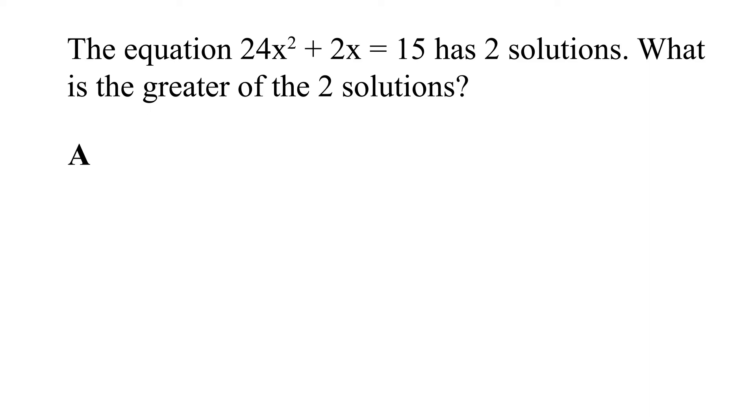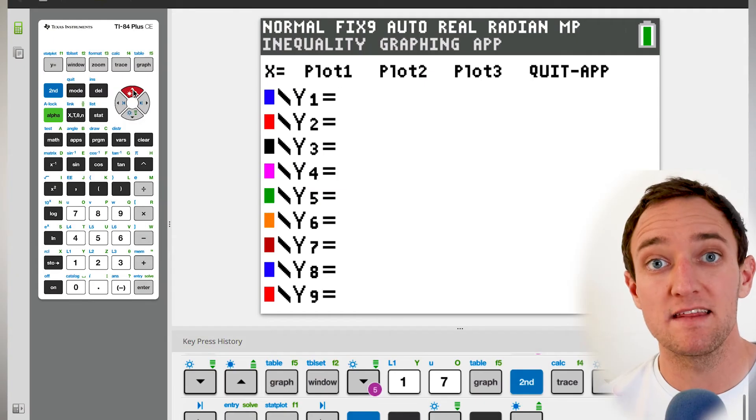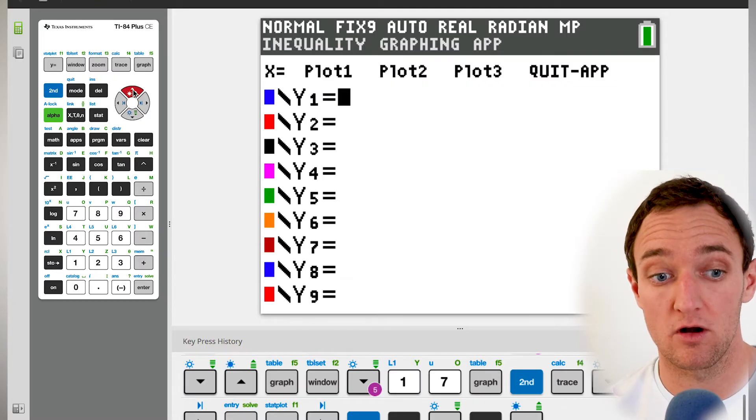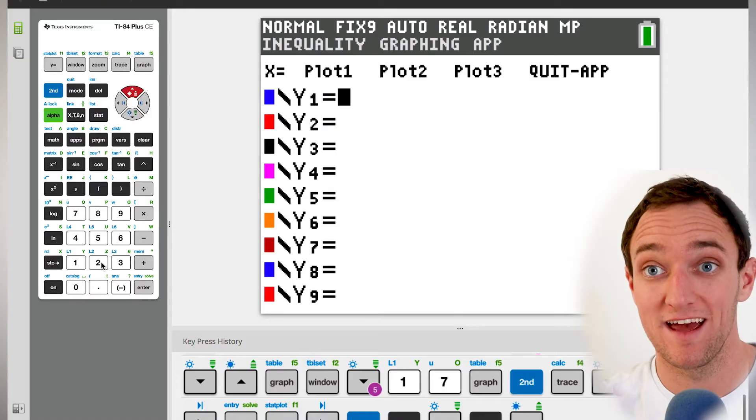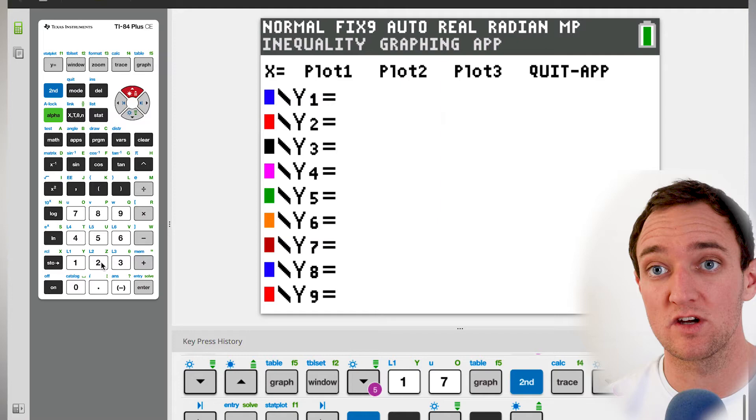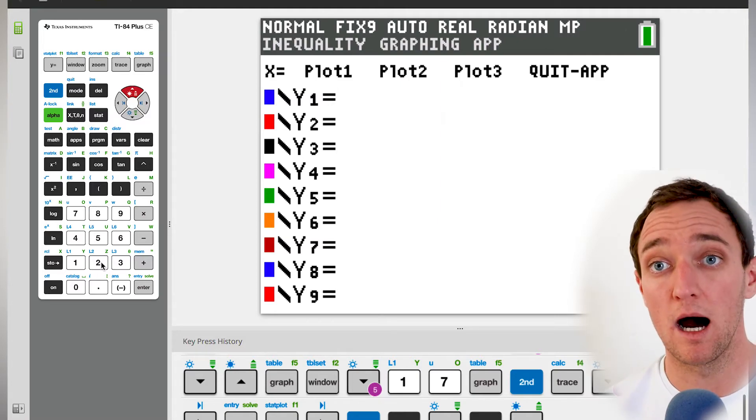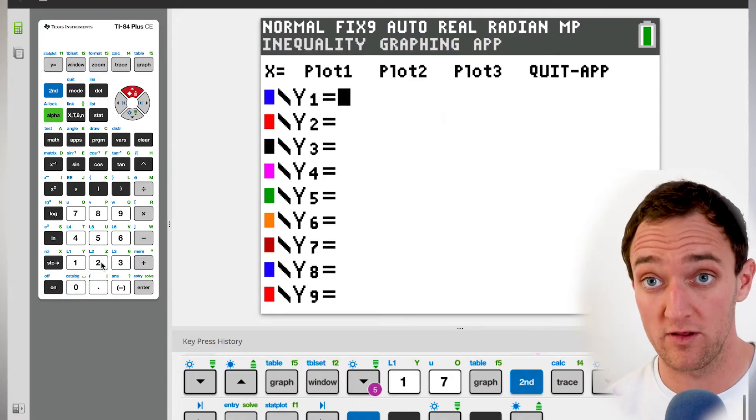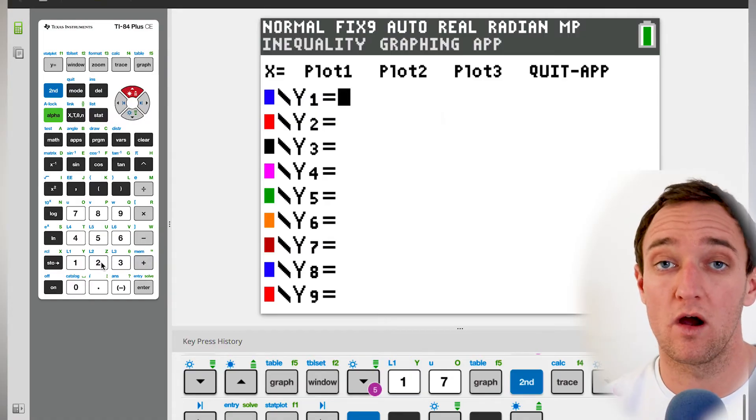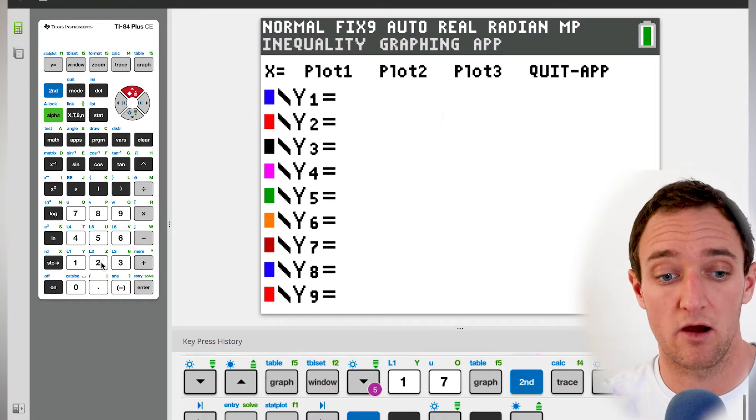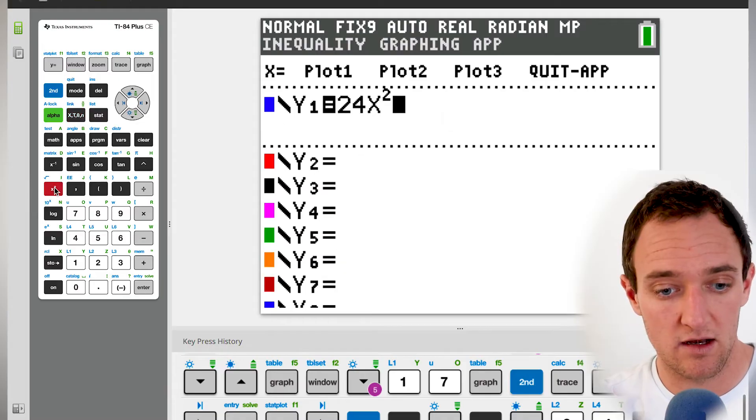Our first one there was maybe what the ACT would consider a slightly easier question. Now we're moving to what I might call a medium question. So here, what we've got, let me just pull it up for us here. So the equation 24X squared plus 2X equals 15 has two solutions. What is the greater of the two solutions? So this is question 41 from form Z04. So the first thing that we want to do to solve one of these is pull up that Y equals on our calculator again. And we want to put in these two equations. Now you might be saying two equations, what are you talking about? I only see one equation, but what I'm going to do is actually split the two sides of this up. So we're going to have Y equals one side and Y equals the other side.